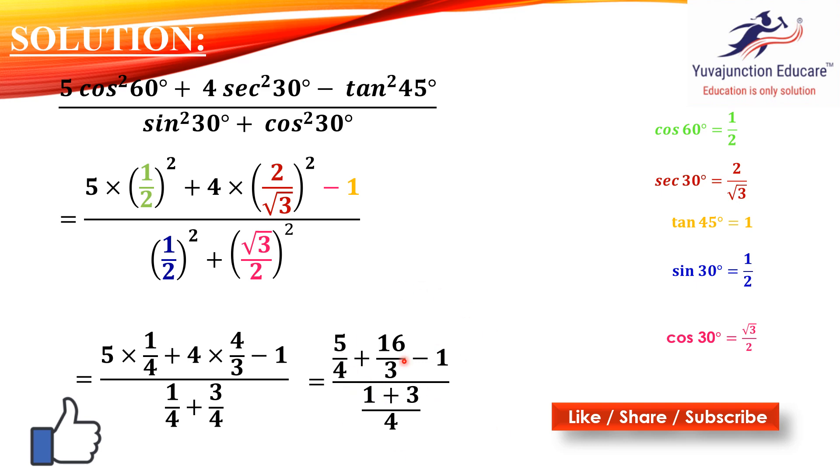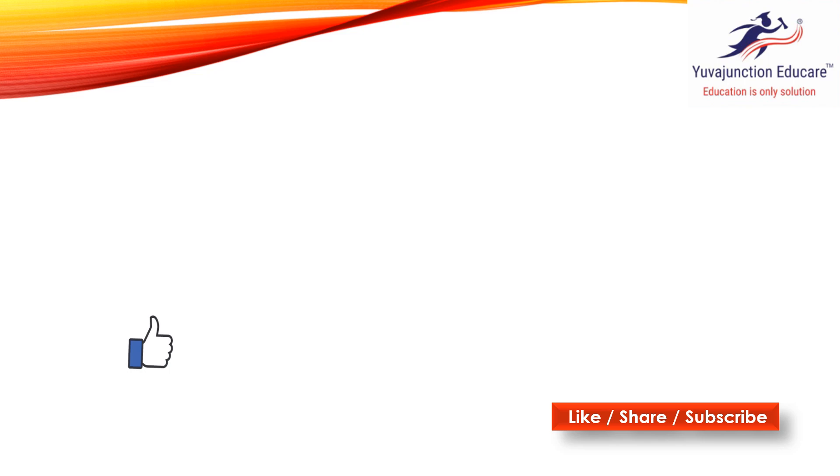We will solve the fractions. LCM is 12. So we have (5 × 3 + 16 × 4 - 12) divided by 12, which is (15 + 64 - 12) divided by 12, and 1 plus 3 is 4, divided by 4, so 4 cancels. 15 plus 64 minus 12 equals 67, divided by 12. So the answer is 67/12.